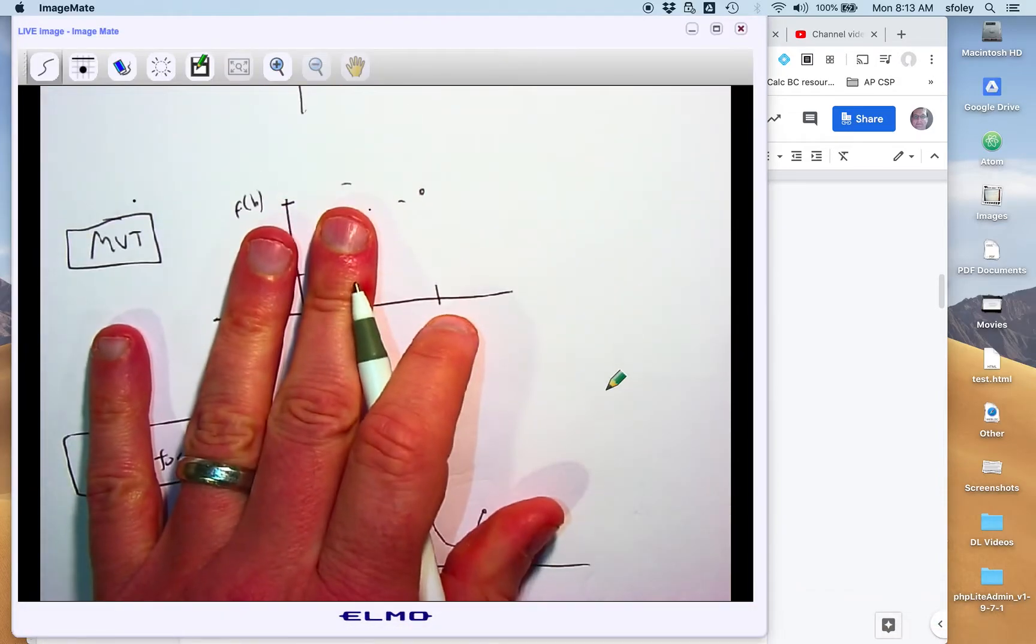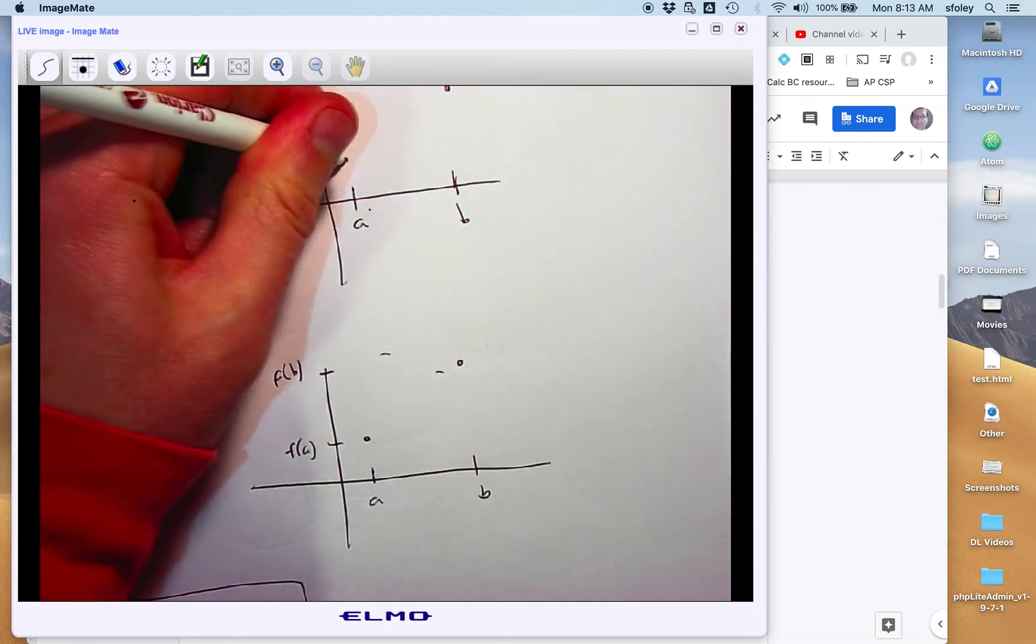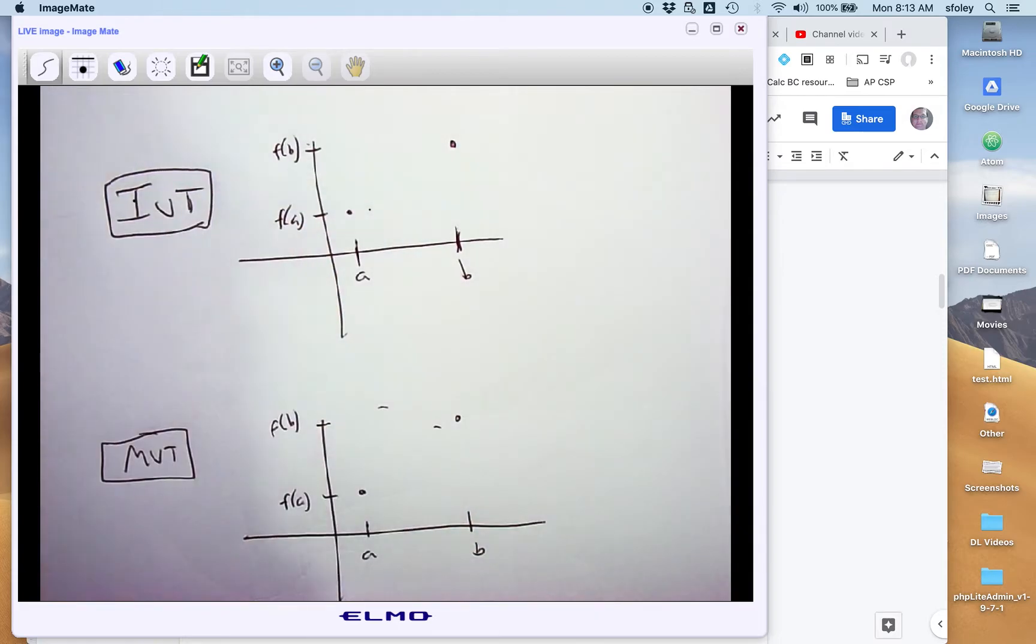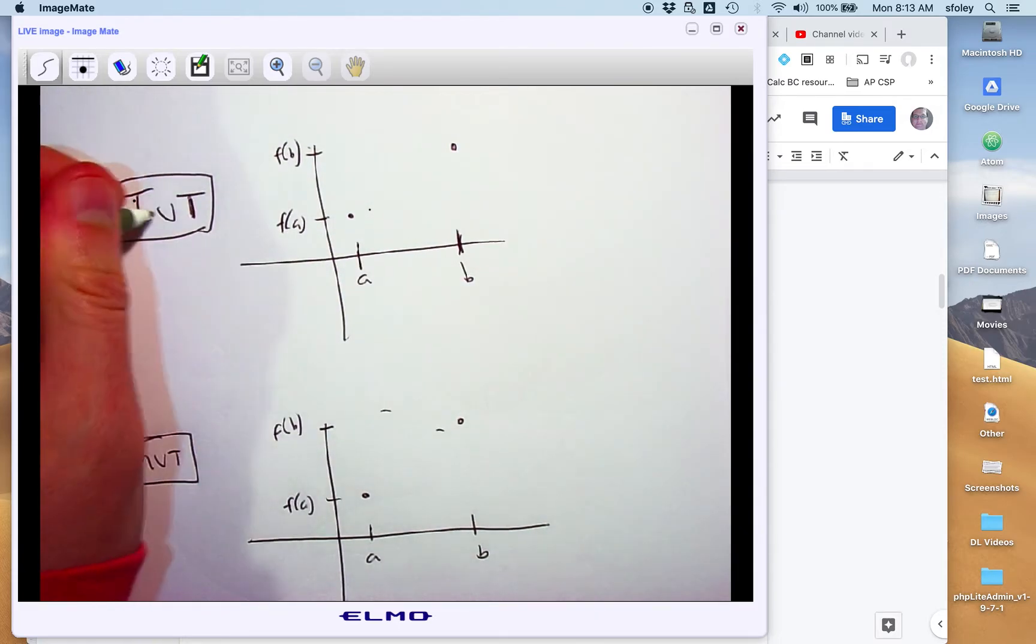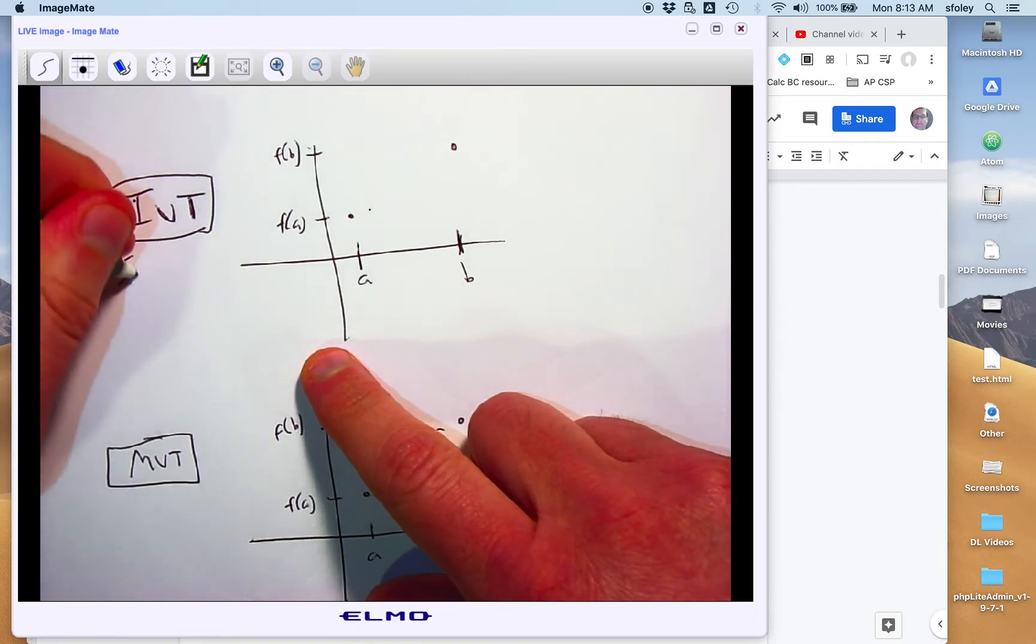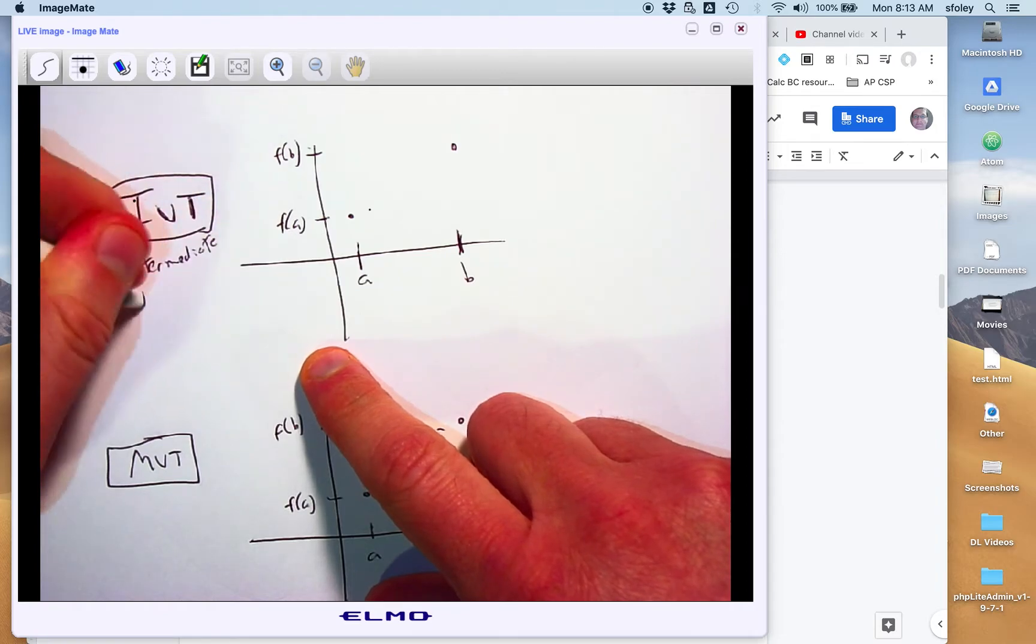All right, so we're going to talk about the big named theorems here. Hard to tell in this year's format how much these will show up on the AP test, but they're definitely big ideas, and there's a chance they'll come up in one way or another. So first is the IVT, the Intermediate Value Theorem.